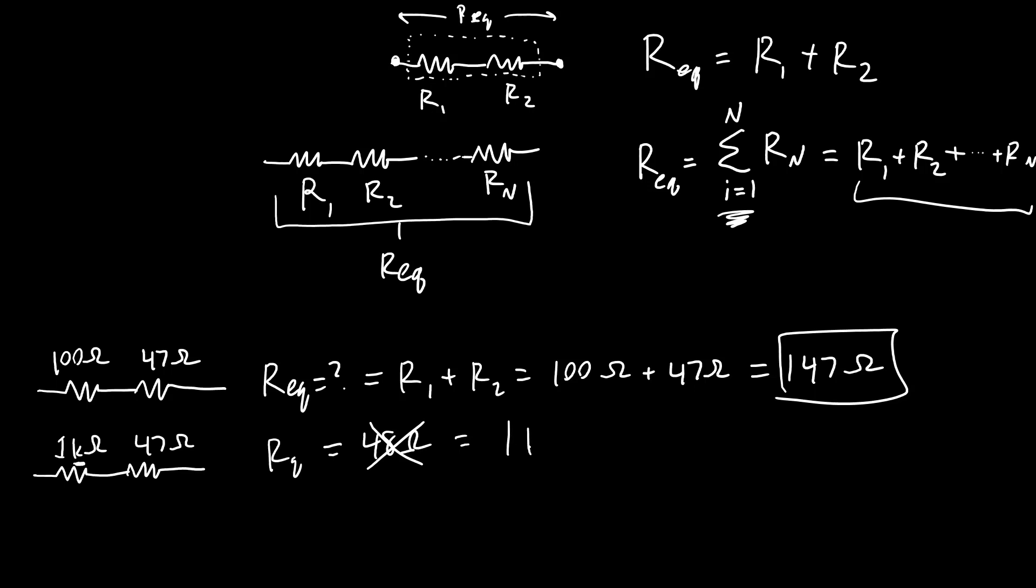R_EQ there is 1 kilo-ohm plus 47 ohms, which is 1000 ohms plus 47 ohms, which is 1047 ohms, if we are not really worried about significant digits or the tolerance on the resistors. So again, just be careful. Don't make simple math mistakes and ignore your prefixes. Make sure you are doing that correctly.